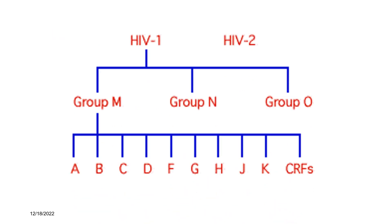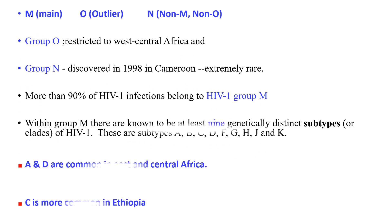HIV-1 has three main groups: Group M, Group N, and Group O. Group M is the most common type and has different serotypes. M stands for main, O stands for outlier, and N stands for non-M and non-O serotypes. Group O is mainly restricted to West Central Africa, and Group N was discovered in 1998 in Cameroon and is extremely rare.